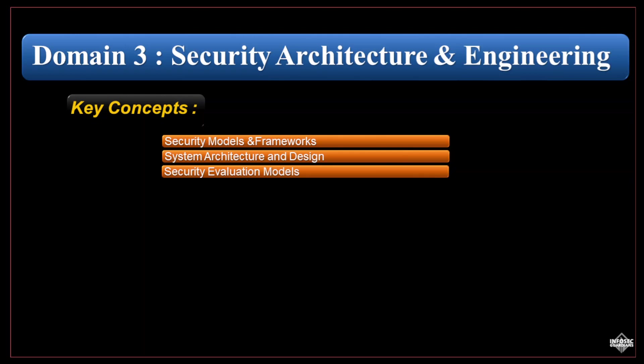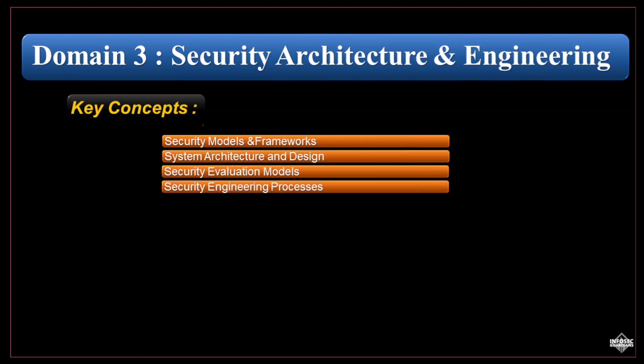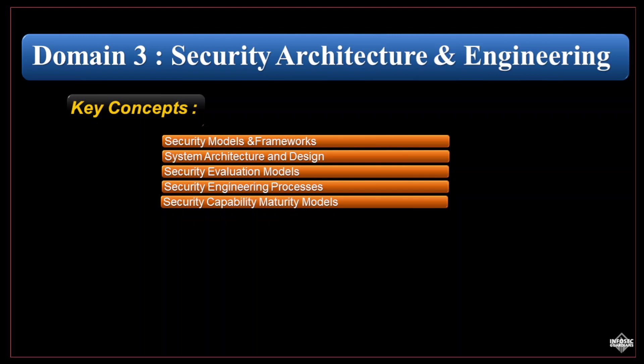Security engineering processes: understand the processes involved in security engineering, including risk assessment, security testing, and code reviews — these are crucial for identifying and mitigating security vulnerabilities. Capability maturity models: familiarize yourself with maturity models like the Capability Maturity Model Integration (CMMI) to measure an organization's capability to manage and improve its security processes.